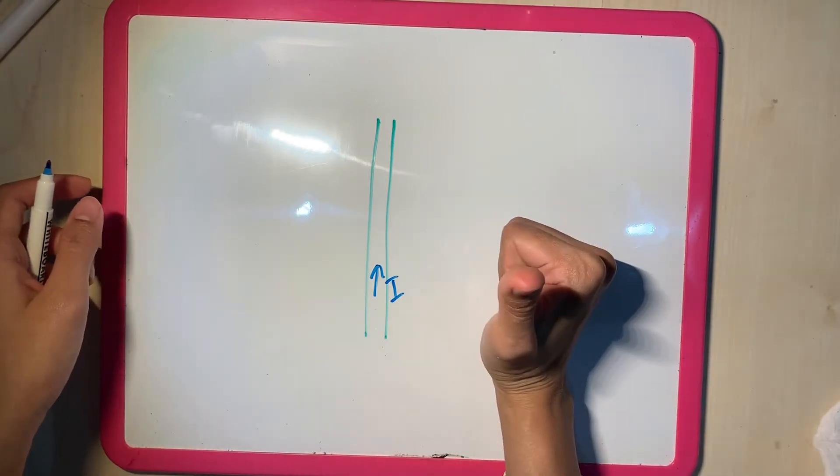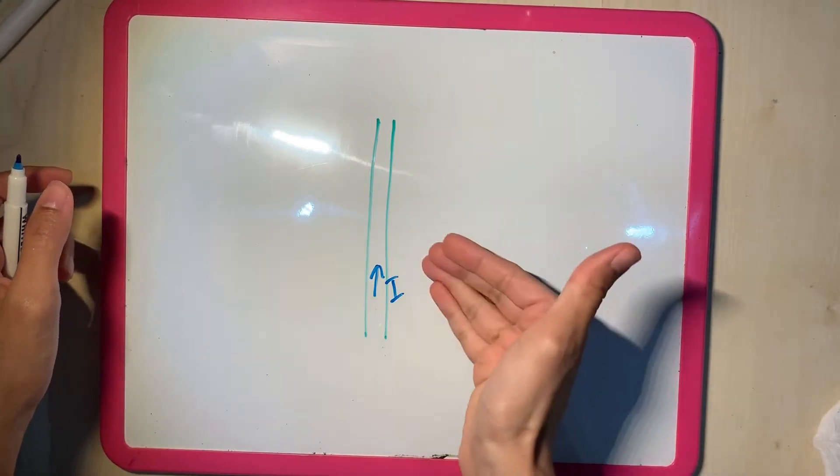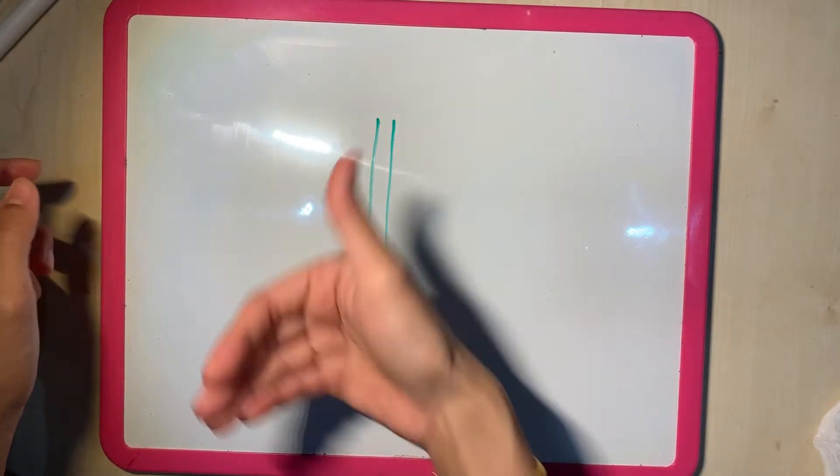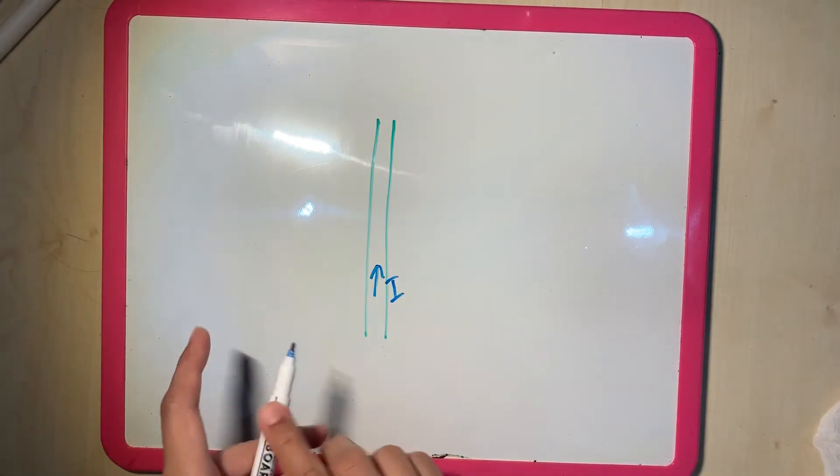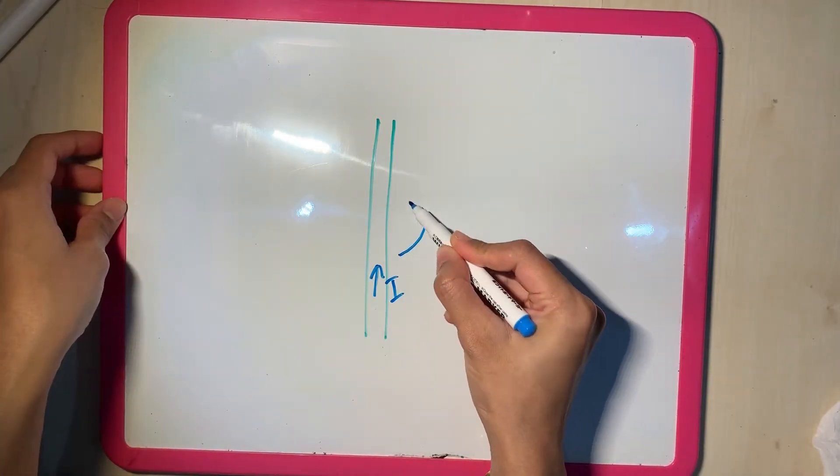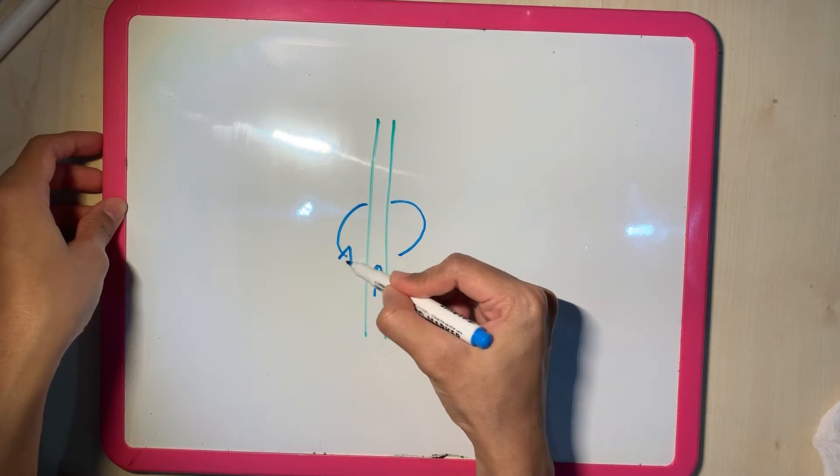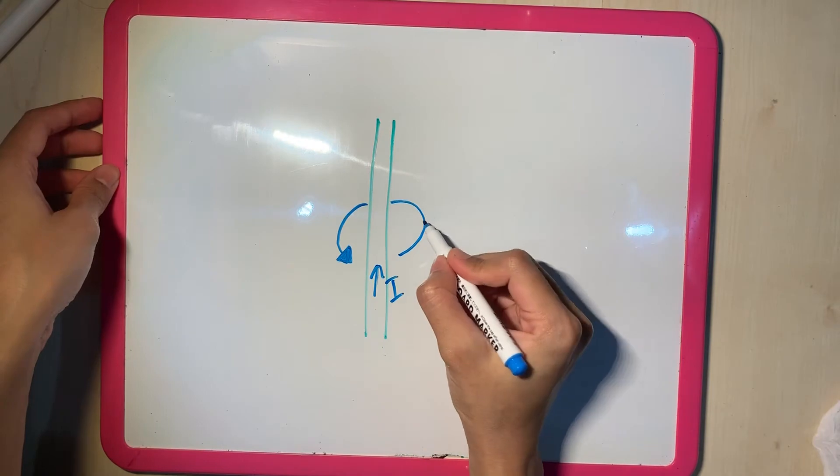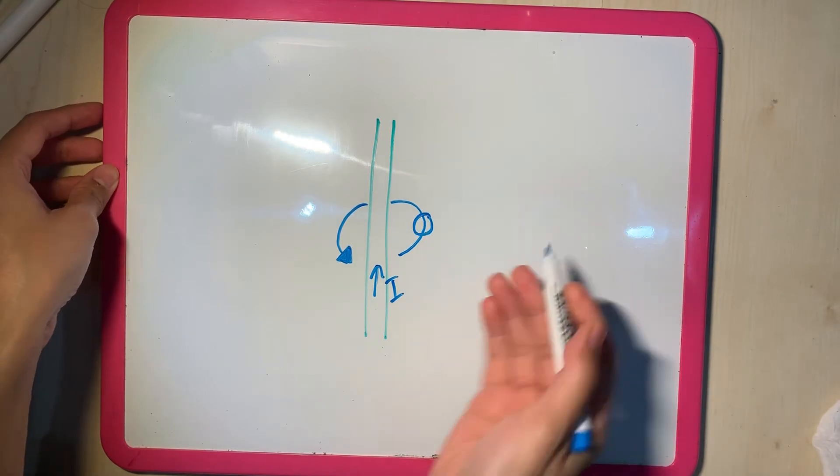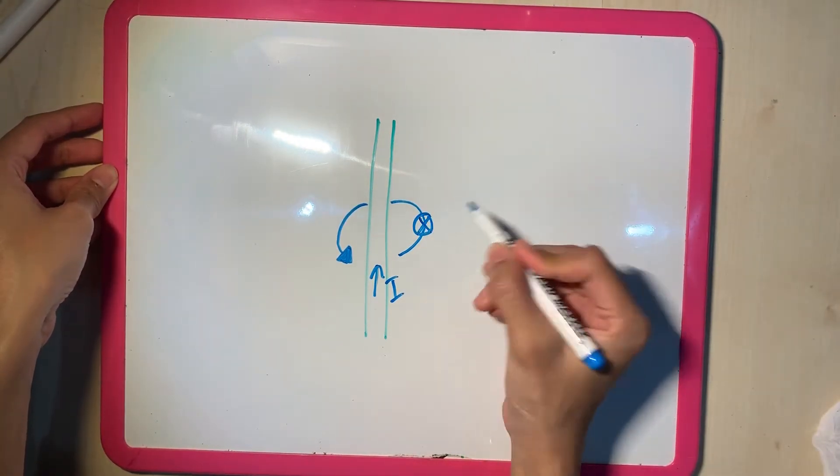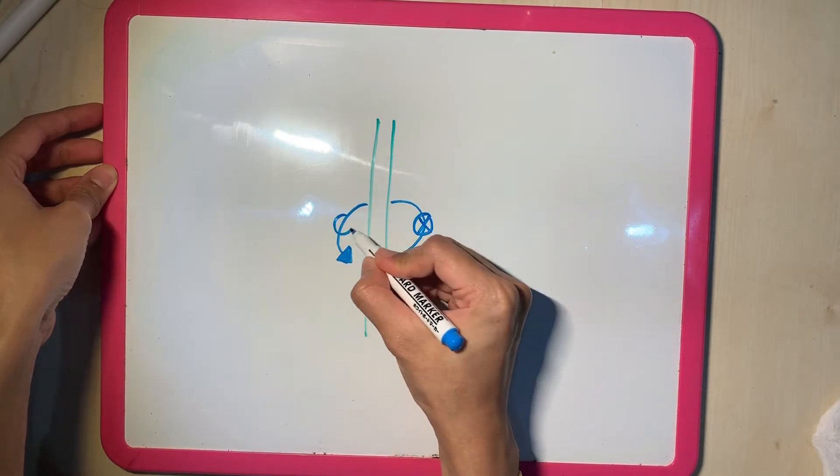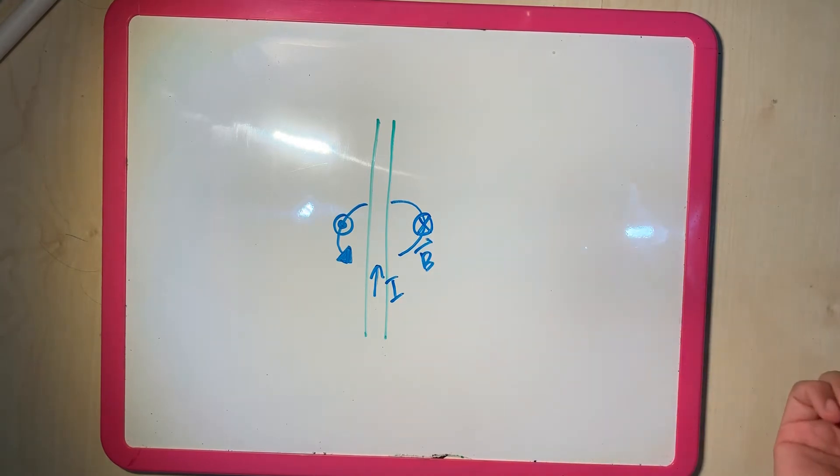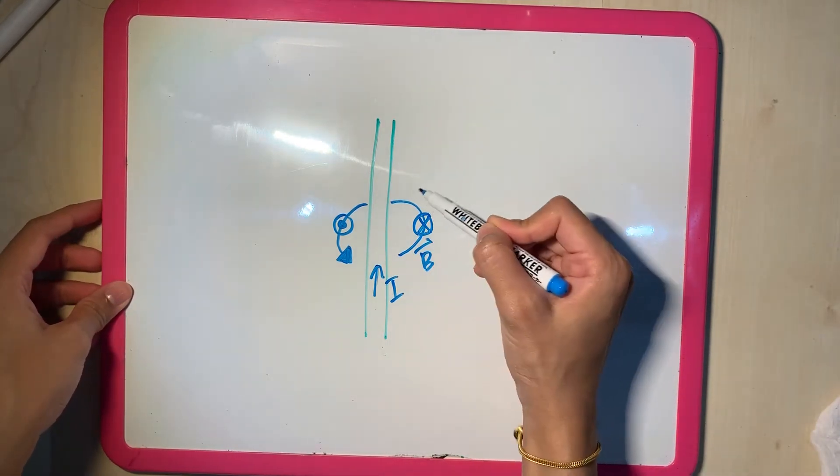So here, if my I is like that, my B is going into the page and out of the page because it goes around the wire. So if I were to draw my B, it would look like this. It's going into the page at this point and it's going out of the page at this point. Now, does my B only act at this point? No. Actually, my B is everywhere.